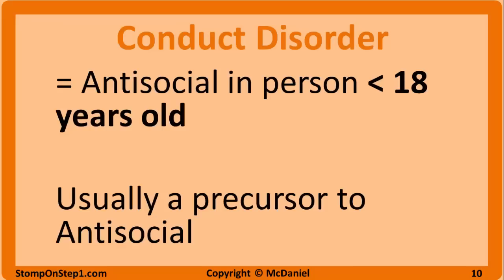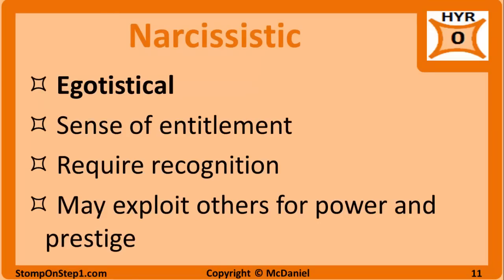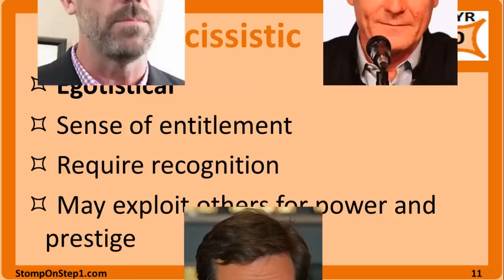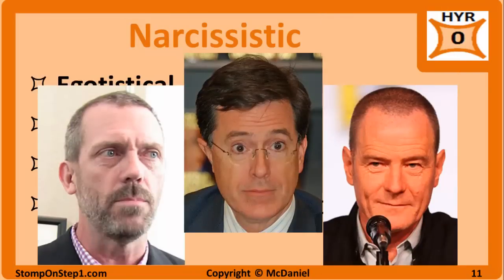People with narcissistic personality disorder are vain and egotistical. They have a sense of entitlement and an inflated, grandiose self-image. Narcissists require recognition of their success and lack empathy or patience for others. They are preoccupied with power and prestige and often exploit others — however, this exploitation is for status or recognition, unlike antisocial people who exploit others for material gain or just because they enjoy it. Examples include Gregory House M.D., Walter White from Breaking Bad, and Stephen Colbert.